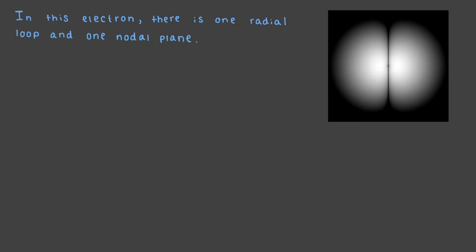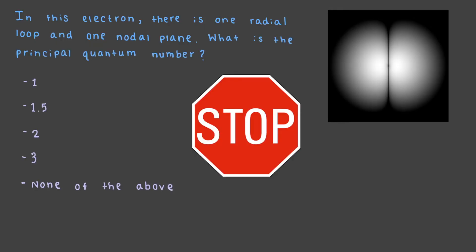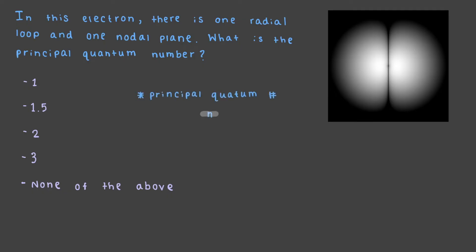In this electron, there is one radial loop and one nodal plane. What is the principal quantum number? Remember that the principal quantum number, n, is the total number of loops that an electron has.